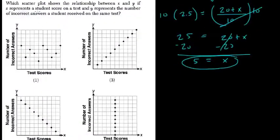All right, which scatter plot shows the relationship between x and y if x represents a student's score on a test and y represents the number of incorrect answers? So the more answers you get incorrect, the lower your score.